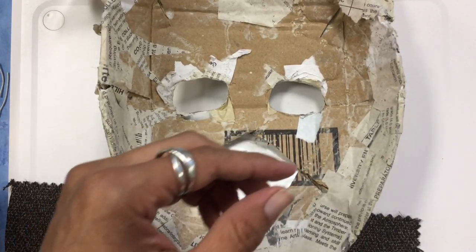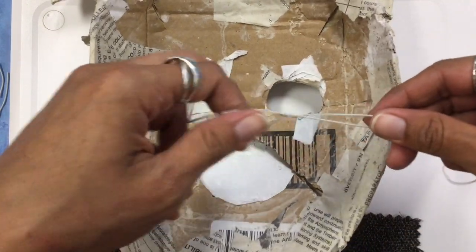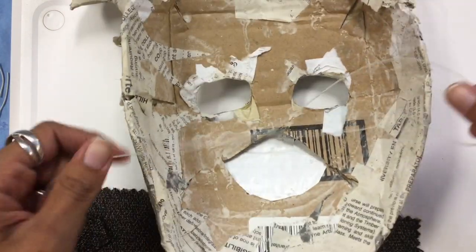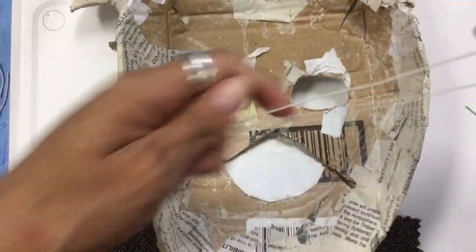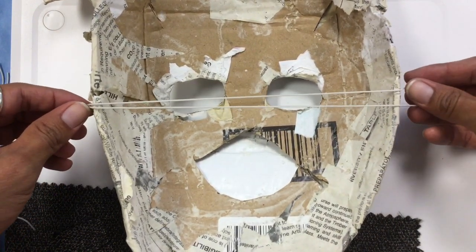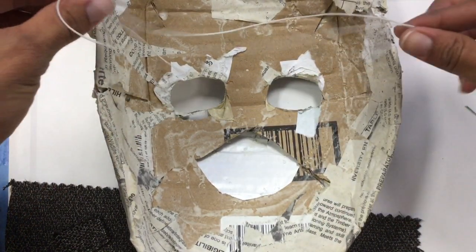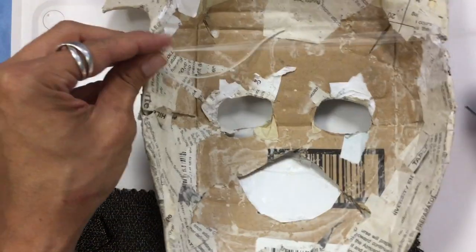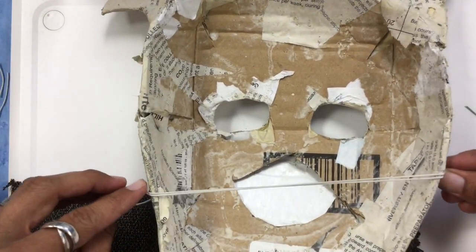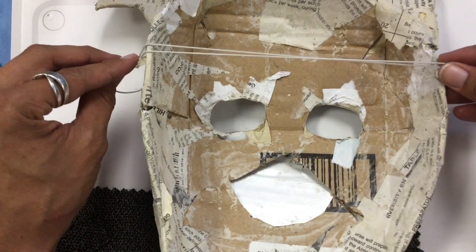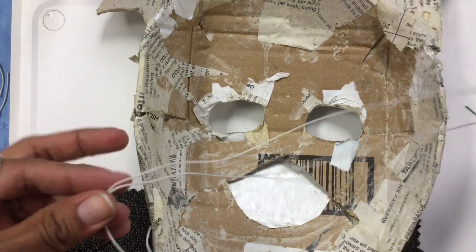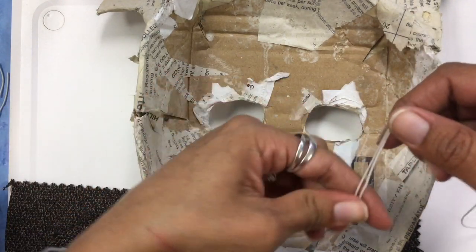I cut some elastic string and doubled it up because this mask is pretty heavy. I'm going to go across from here to here. The other option for heavier masks is to do this twice - one up here and one down below, so you have two strings going across. Even doubled up, some of these masks are very heavy.